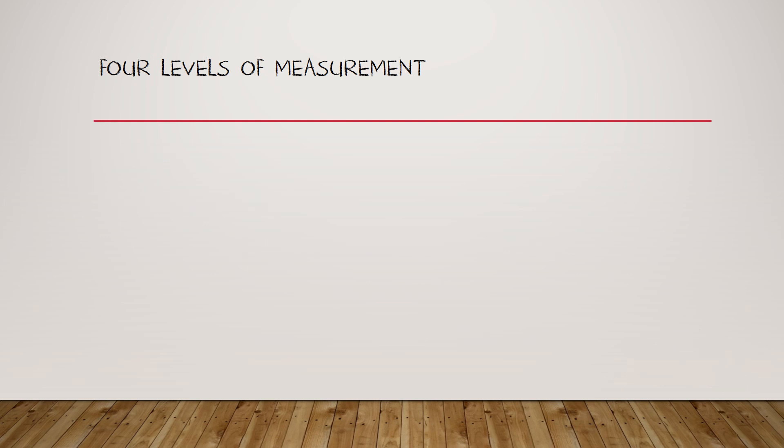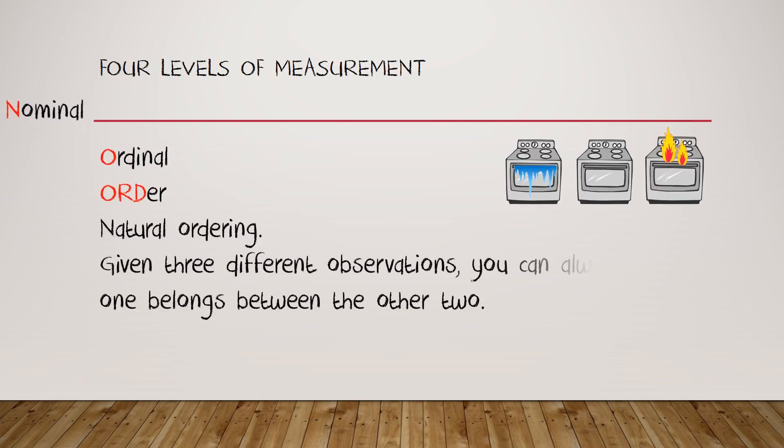The next level of data after this, however, adds a little bit more structure. You'll recall that's ordinal data, and ordinal data has a natural ordering. The ord in ordinal can help you to remember this. Given three different observations, you can always tell which one belongs between the other two. But how much of a gap exists between one observation and another may be impossible to tell, or even the idea of a gap size may be meaningless.